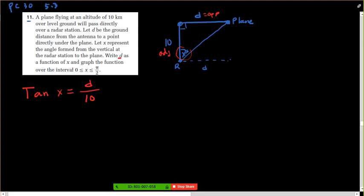And if you wanted to write D as a function of X, then you have to isolate for D. And you would say D is, multiply both sides by 10. D equals 10 tan X.